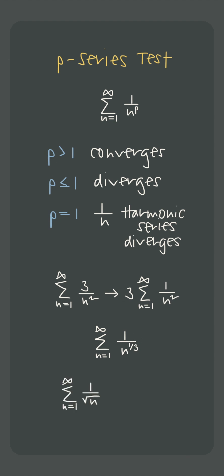And this is a divergent p-series because we can rewrite the square root of n as n to the 1 half, and therefore p is less than 1, and the series diverges.